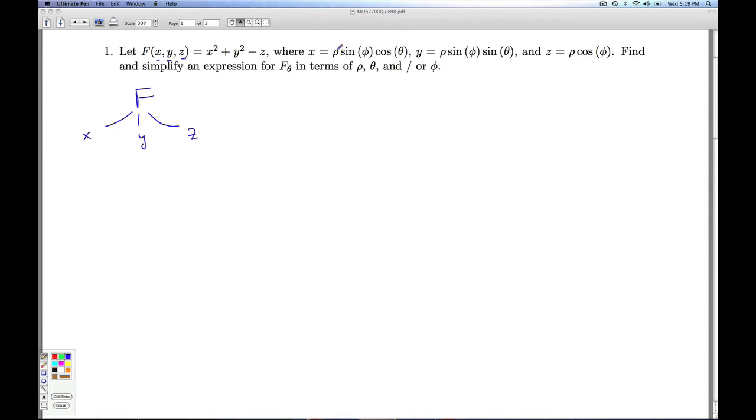x depends on rho, phi, and theta. So there's rho, phi, and theta. y depends on rho, phi, and theta as well. But z just depends on rho and phi. So there's that.